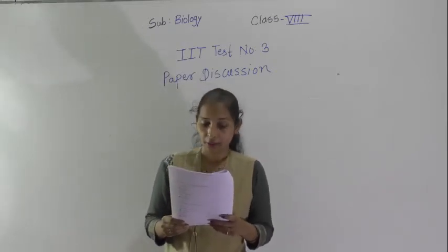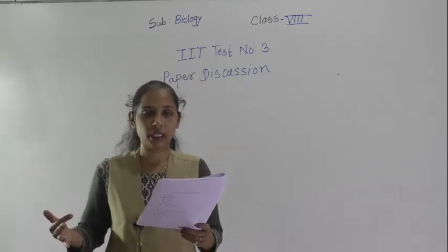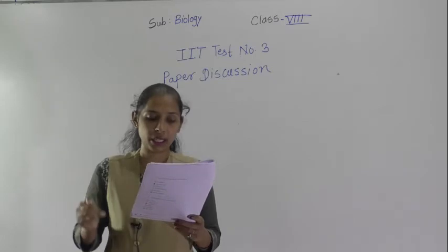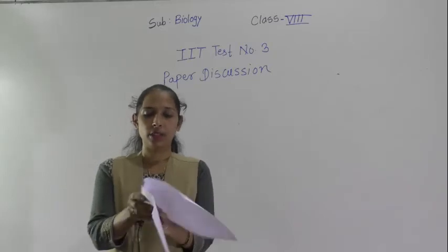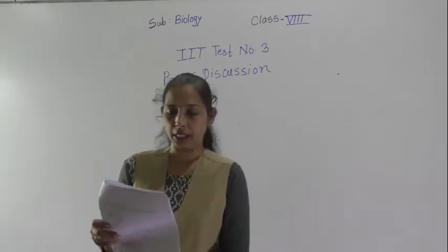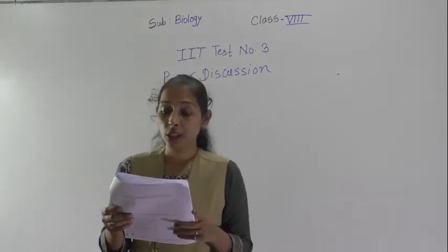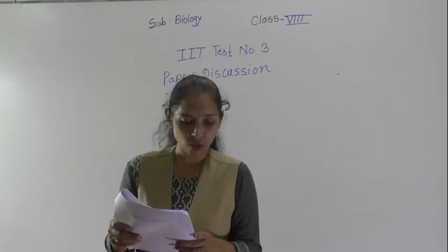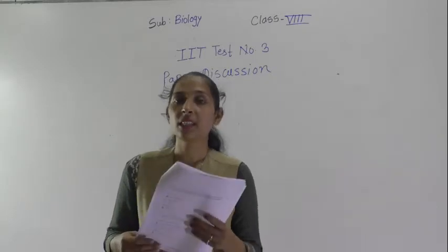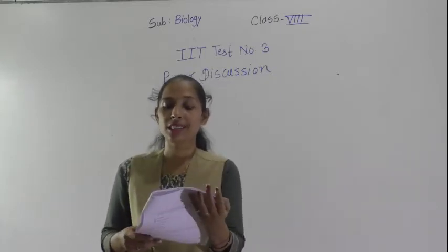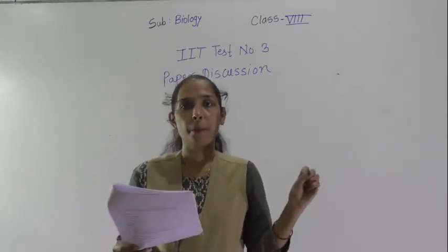Question number 12: what are the colourless plastids in plants? There are three types of plastids present in plants. Among them, leucoplast is a colourless plastid. Question number 13: which structure stores food, waste, and water? The correct option is D — vacuoles. Vacuoles are the sac-like structures that store food, water, and waste material.